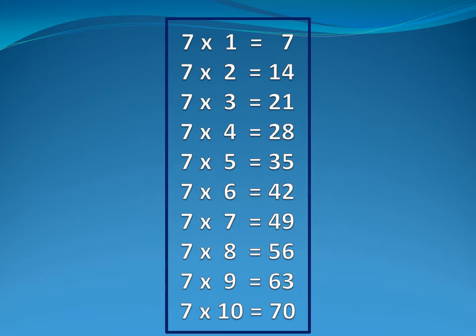Now seven table. Seven one is seven. Seven two is fourteen. Seven three is twenty-one. Seven four is twenty-eight. Seven five is thirty-five.